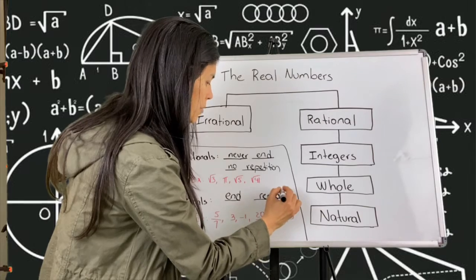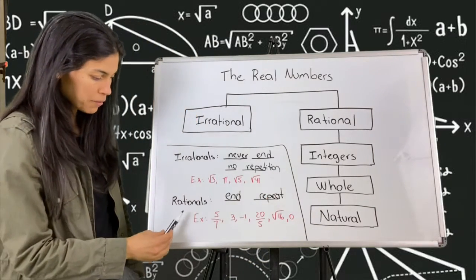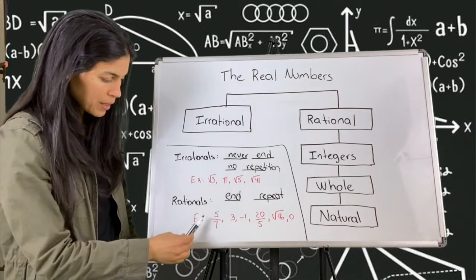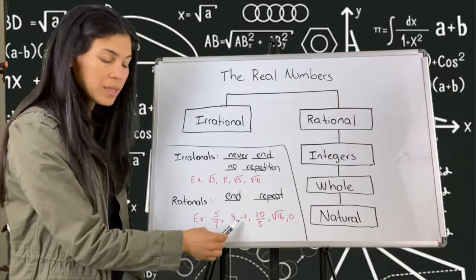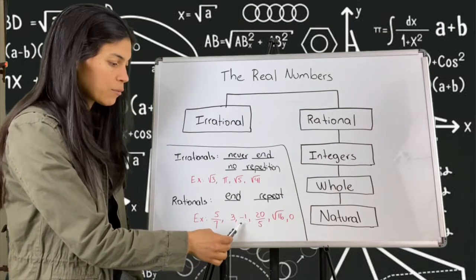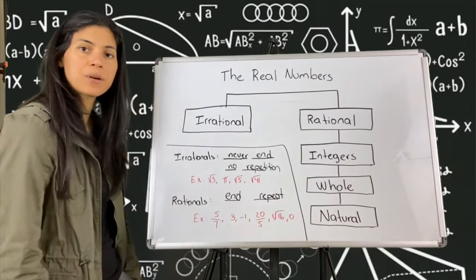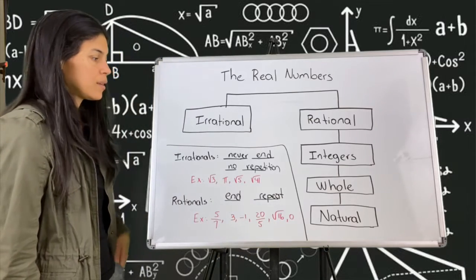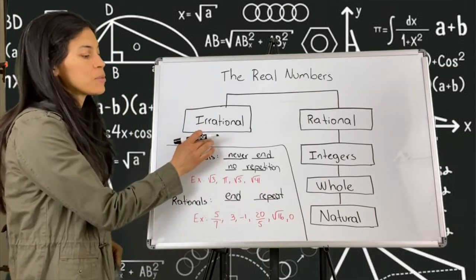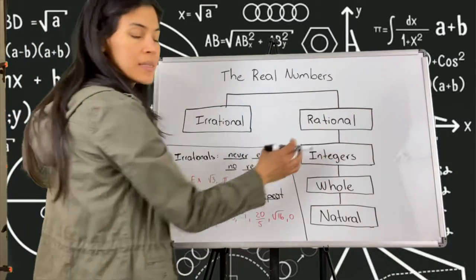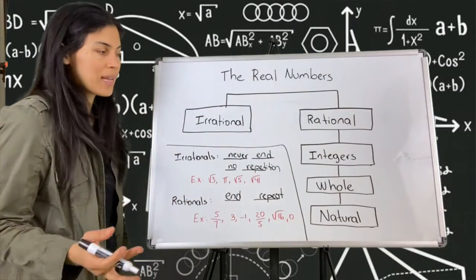Some examples of rational numbers are the fraction 5/7, the number 3, negative 1, 20 over 5, the square root of 16, 0, and so on. So to summarize: irrationals are decimals that never end or repeat; rationals are decimals that do end or they repeat.